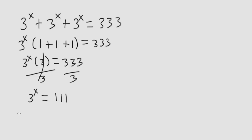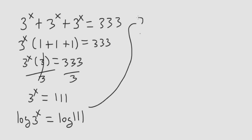Take the logarithm of both sides and you get log of 3 to the x is equal to log of 111. By the rules of logarithms, the x can come in front, so we have x times log of 3 equal to log of 111.